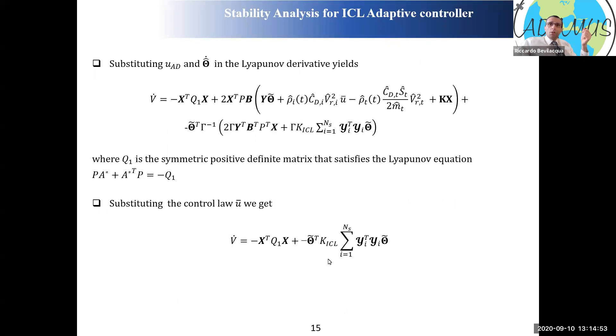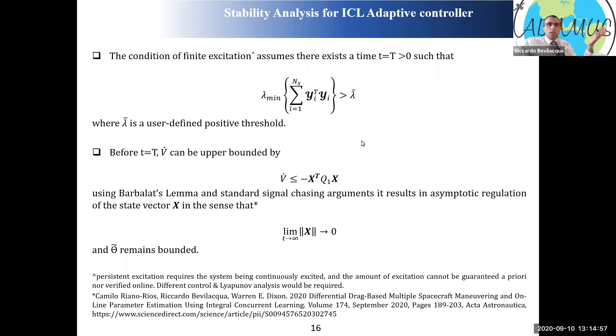If you use Barbalat's Lemma and some other considerations that are in our paper here, you can show that this is not going to give you exponential convergence. All you can do in this initial phase is say that asymptotically the state will go eventually to zero as time goes to infinity, and that the error is at least bounded, it's not exploding. This is the phase of your maneuver where you're basically learning. You are accumulating these integrals, the ICL term is accumulating integrals, and you can actually switch it off in your controller. It doesn't matter at this point because it's accumulating knowledge up to the point of having that minimum eigenvalue being greater than your threshold.